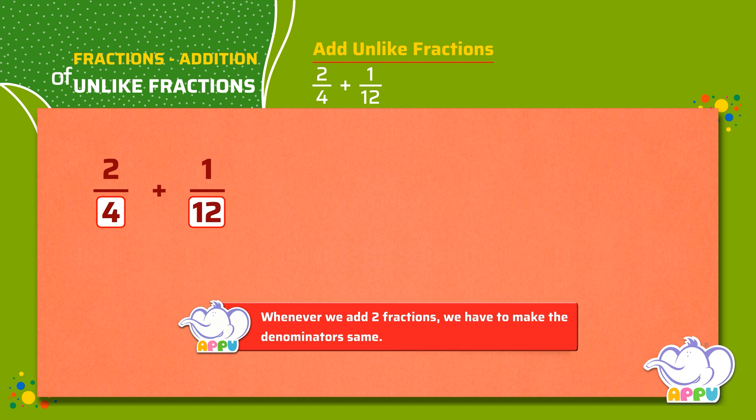So to change the denominator from 4 to 12, we have to multiply 4 by 3. Since we multiply the denominator by 3, we will also have to multiply the numerator by 3, which is 2 times 3, which equals 6.